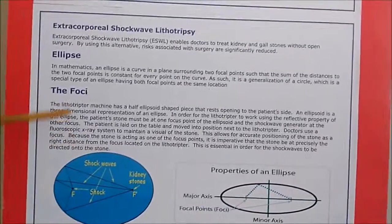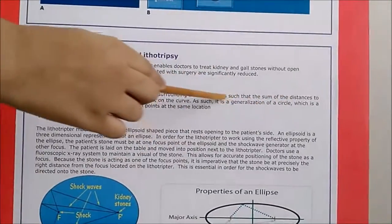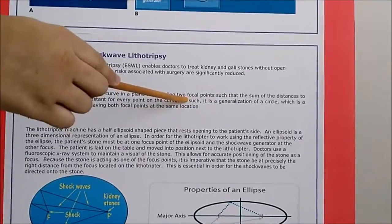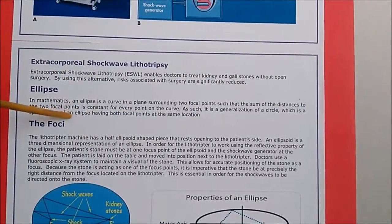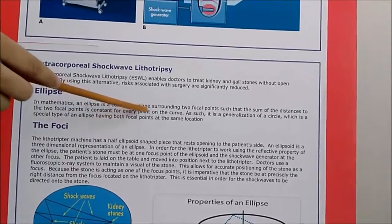Let us see what the focal points do. We can see that the two focal points are such that the sum of the distances to the two focal points is constant for every point on the curve.